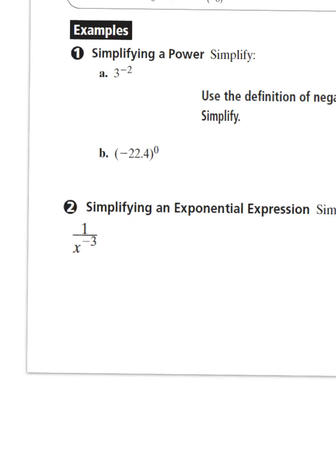Here we have 3 to the negative 2, so we're using our negative rule, and that tells us that if we have a negative exponent, we can take the reciprocal of that and remove the exponent.